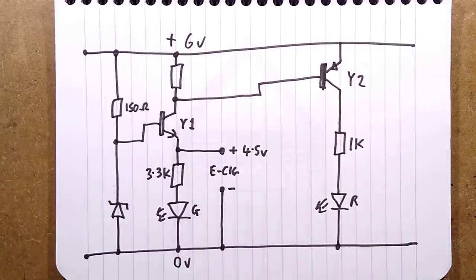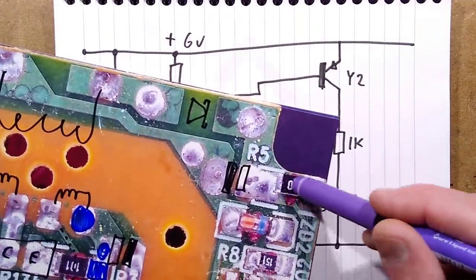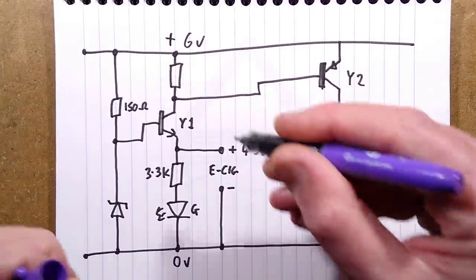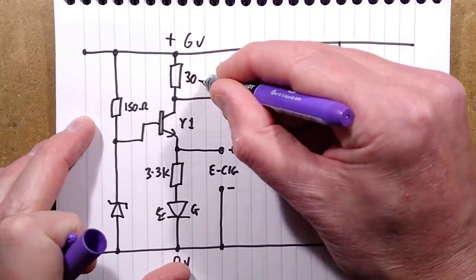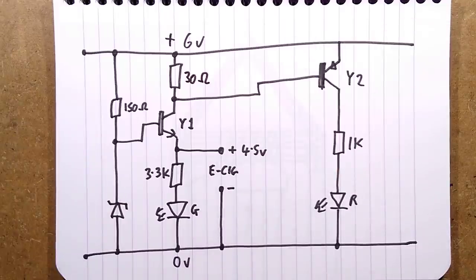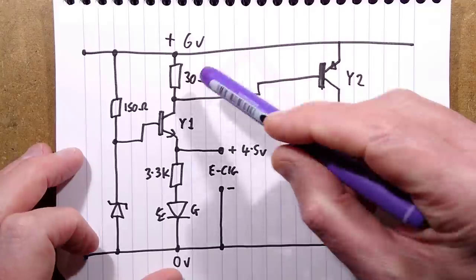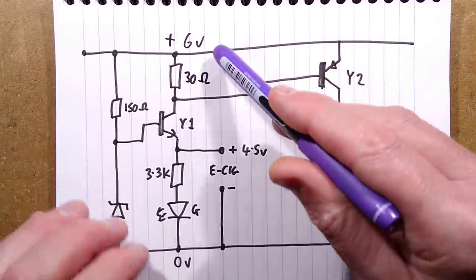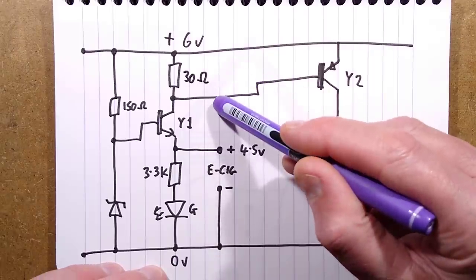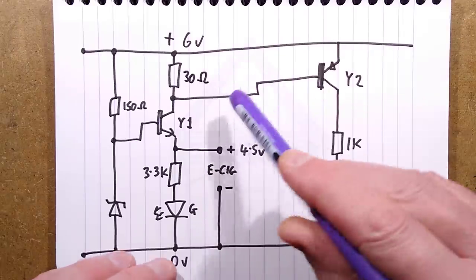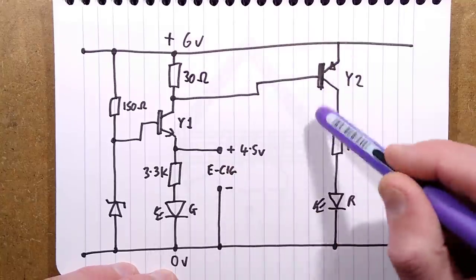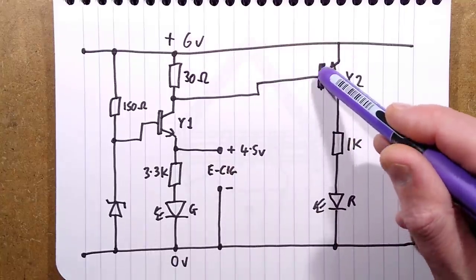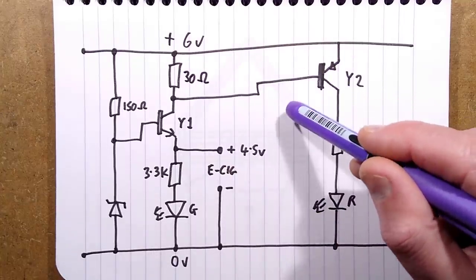There is a 30-ohm resistor which serves to do two things. It limits the current flowing through this into the vaping device. But it also generates a voltage across it depending on how much current is flowing. And when that voltage is greater than 0.6 volts, this transistor is effectively turned off.